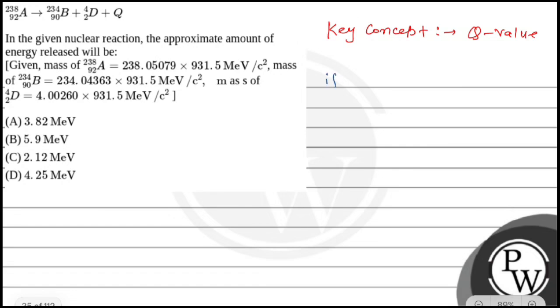If Q-value is greater than zero, it indicates energy is released in the reaction, or it is exothermic. And if Q is less than zero, then energy will be absorbed, making it endothermic.